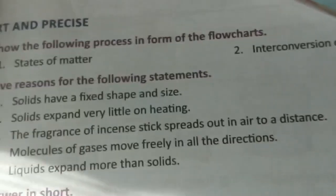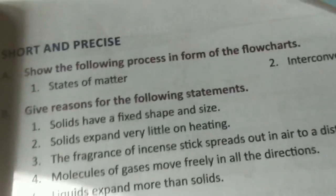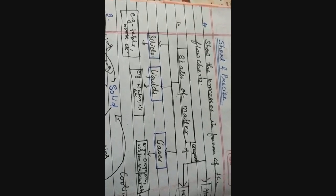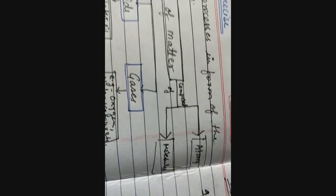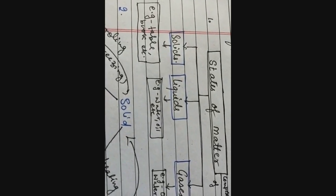Now let's see short and precise. First question: show the processes in the form of a flowchart. For states of matter, make a flowchart starting with 'states of matter,' add an arrow labeled 'composed of,' with two columns for atoms and molecules, then three columns below for solid, liquid, and gas, and write two examples each.